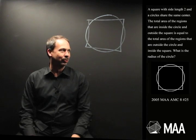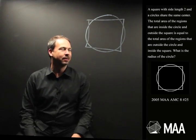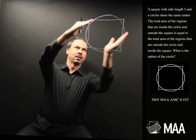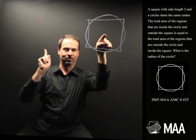A square with side length 2 and a circle share the same centre. Square, circle, same centre. Got it.